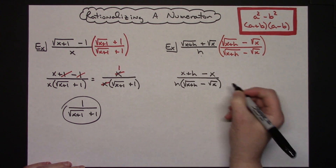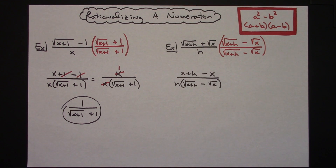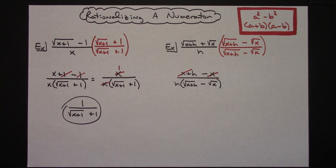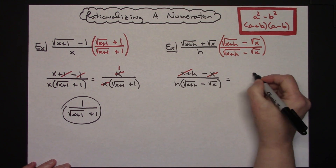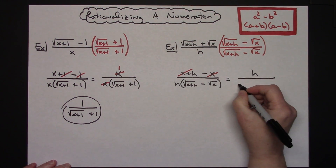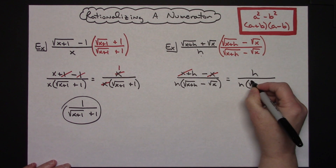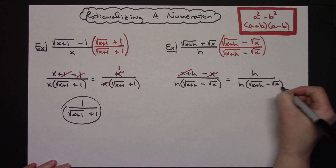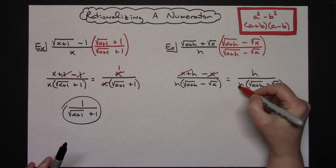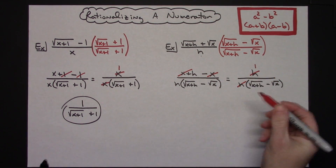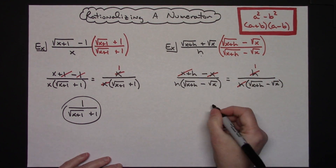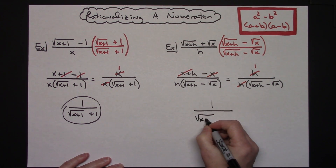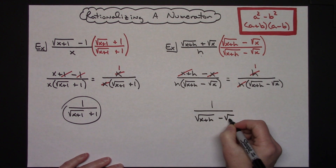On the top, x minus x crosses out, leaving just h in the numerator. So we have h over h times the quantity of the square root of x plus h, minus the square root of x. The h's cross out, leaving a final answer of 1 over the square root of x plus h, minus the square root of x.